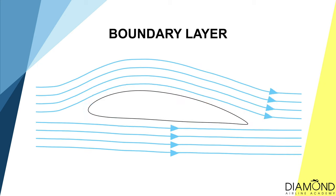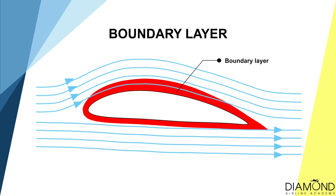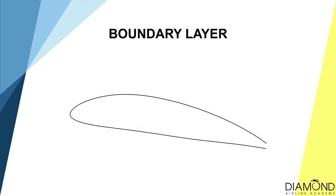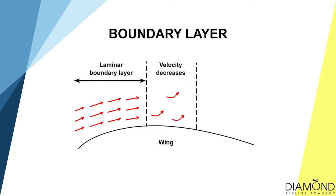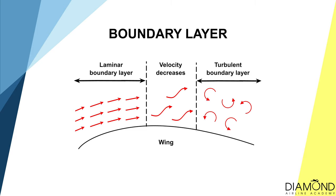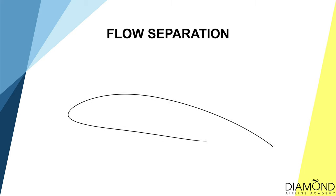The boundary of air that suffers from the reduction in airspeed is called the boundary layer. When the aerofoil is at a lower angle of attack, most of the air within the boundary layer flows smoothly — we call this the laminar boundary layer. As the air flows toward the rear portion of the aerofoil, the cumulative effect of skin friction reduces the airflow speed significantly. This creates turbulence within the boundary layer, and we call this the turbulent boundary layer.